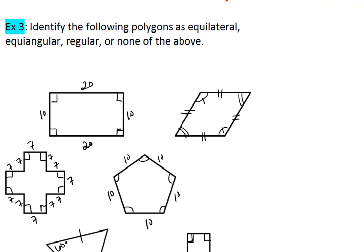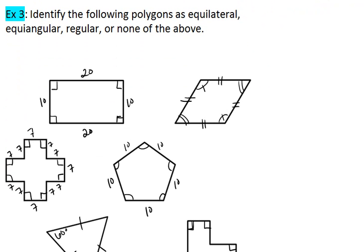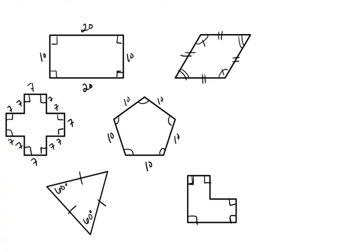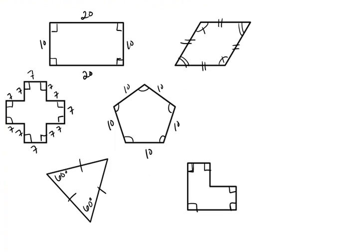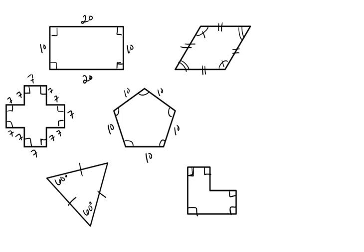Based on those definitions, identify the following polygons as equilateral, equiangular, regular, or none of the above. Take a moment to do so, pause your video. Start the video again when you are ready to see the solutions.